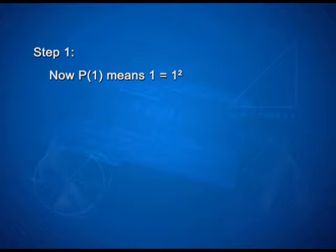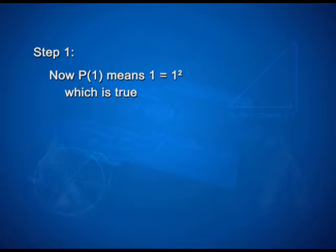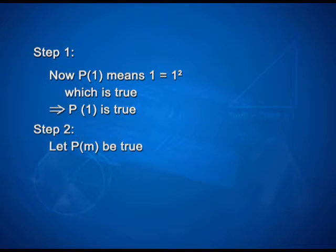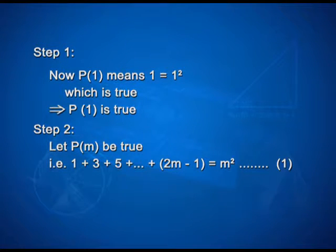Step 1: P(1) means 1 equals 1 squared, which is true. Therefore P of 1 is true. In step 2, assume P(m) is true, that is 1 + 3 + 5 + ... + (2m−1) = m². Take this as equation 1.